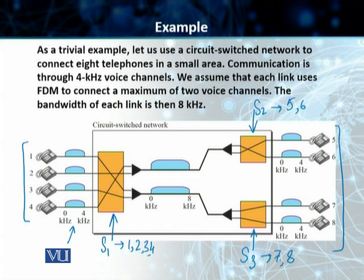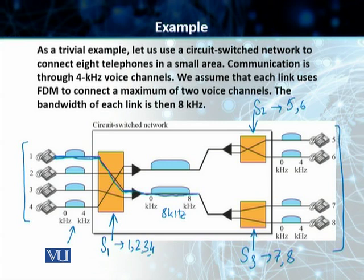In this example, telephone one is connected to telephone seven. Once telephone one establishes the connection, this is the pathway: FDM multiplexing goes onto the eight kilohertz link, it is then demultiplexed, and the stream is transmitted to telephone set number seven. They are now connected.